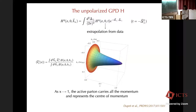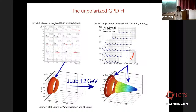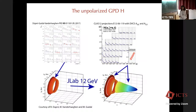This picture is not completely reconstructed from data — we can only reconstruct this part of the head. This is the coverage in x from the experiment obtained at JLAB before the upgrade. Here is the projection we expect with the inclusion of JLAB data at 12 GeV.